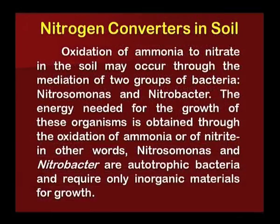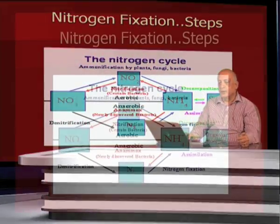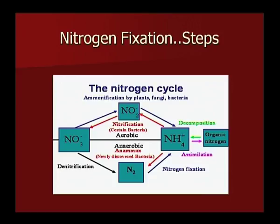There are nitrogen converters — free-living bacteria in the soil — which can convert nitrogen directly into nitrate or ammonia form. This oxidation of ammonia to nitrate may occur through two groups of bacteria: Nitrosomonas and Nitrobacter. The energy needed for the growth of these organisms is obtained through the oxidation of ammonia or nitrite. Nitrosomonas and Nitrobacter are autotrophic bacteria requiring only inorganic material for growth.